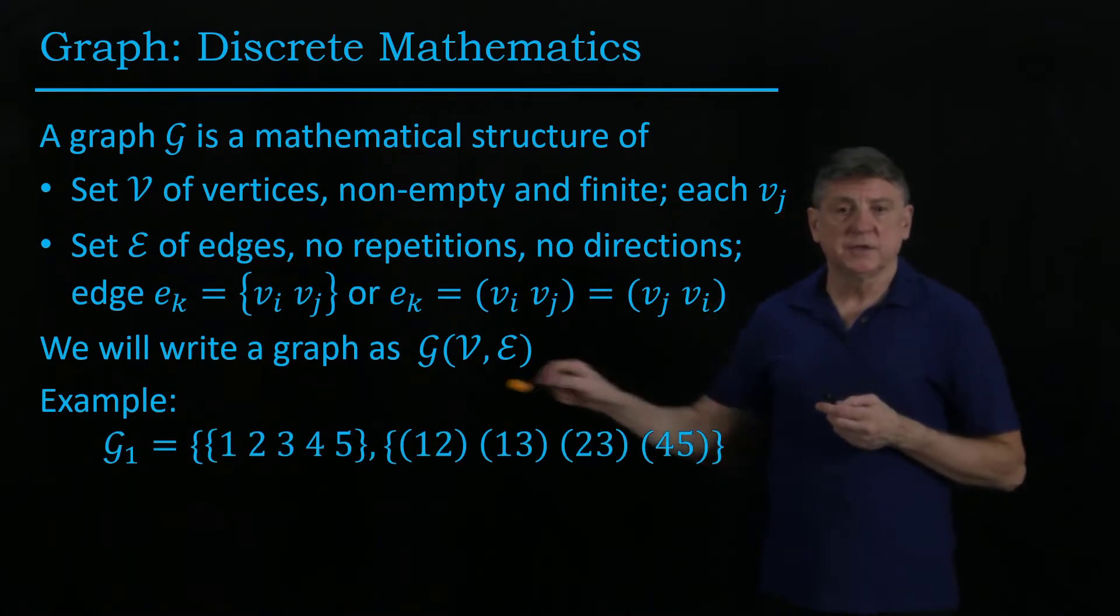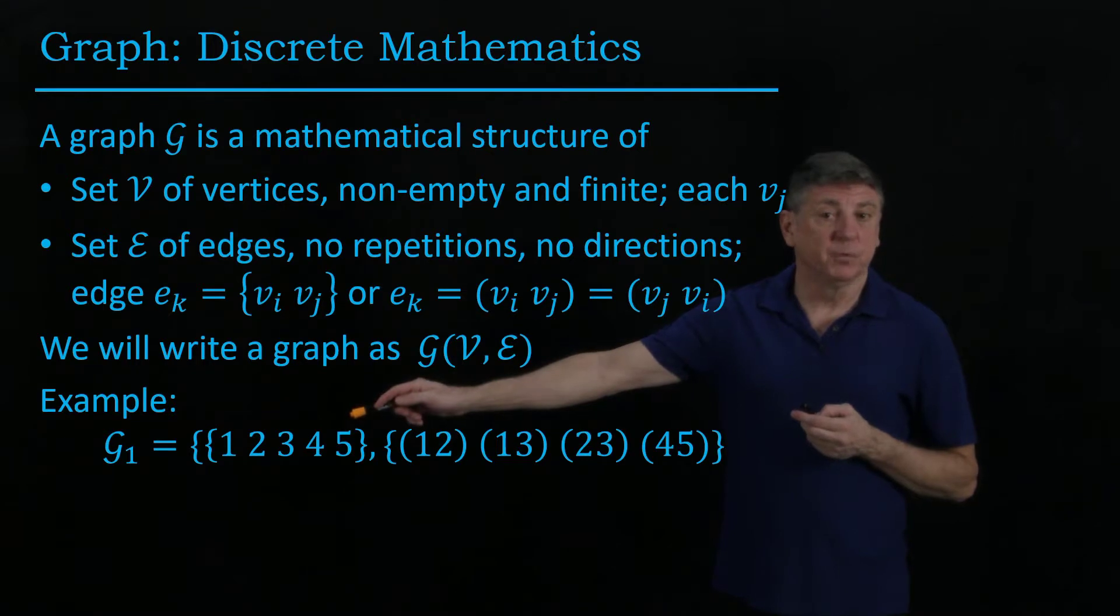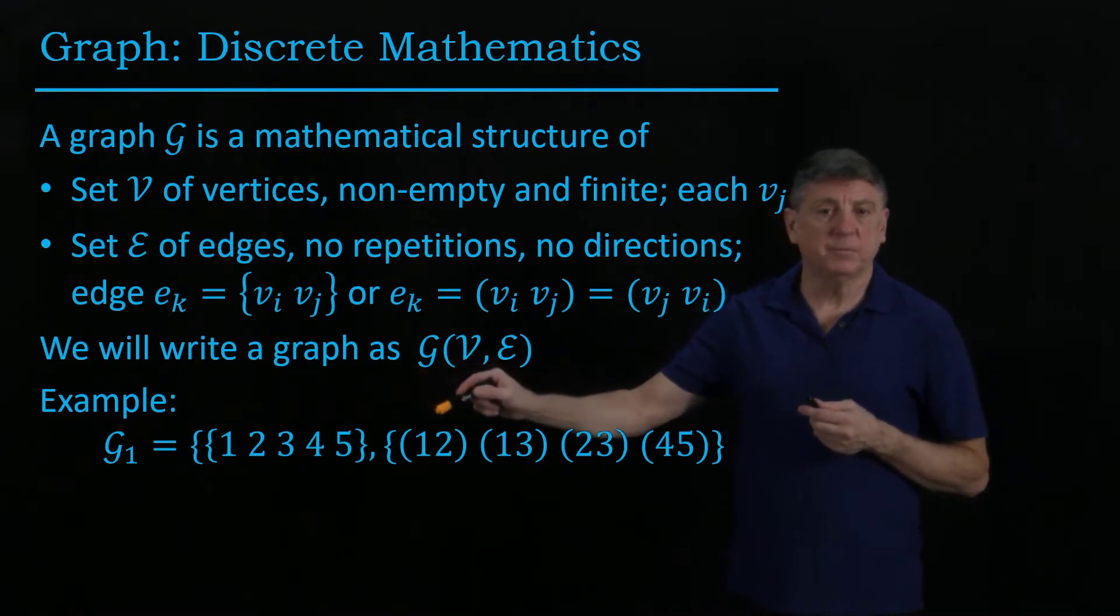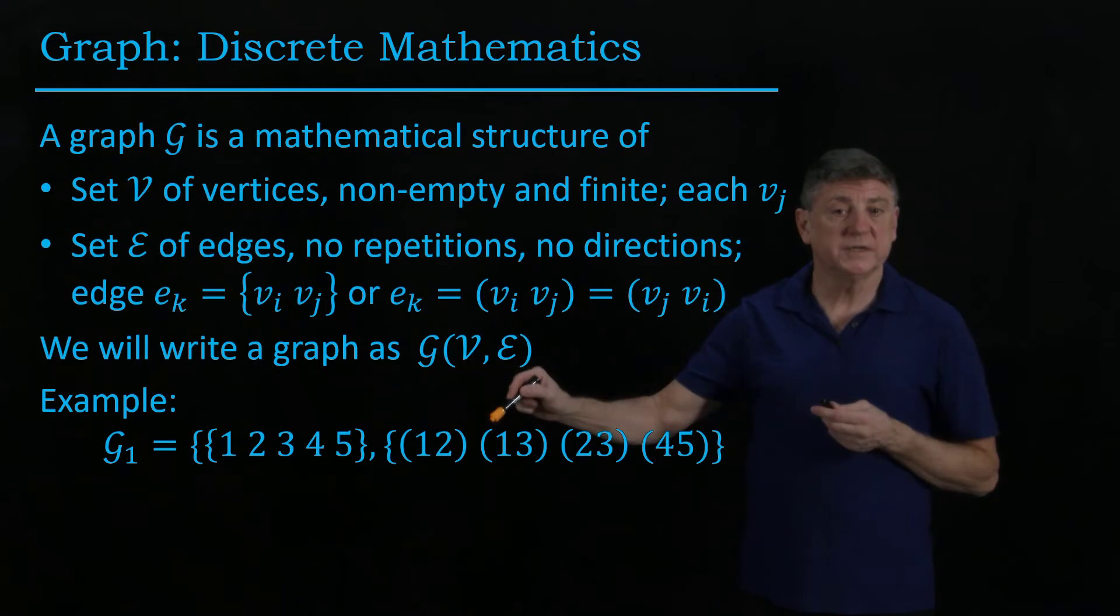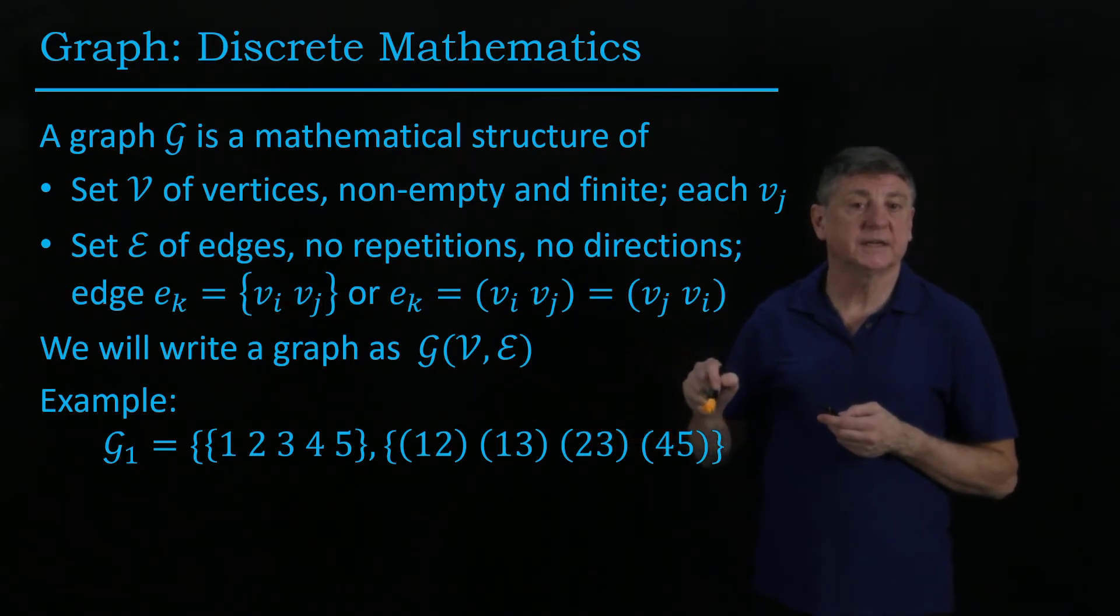So one example is our set of vertices, maybe 1, 2, 3, 4, 5, and then our graph would be the pair 1 is connected to 2, 1 is connected to 3, 2 is connected to 3, and 4 is connected to 5.